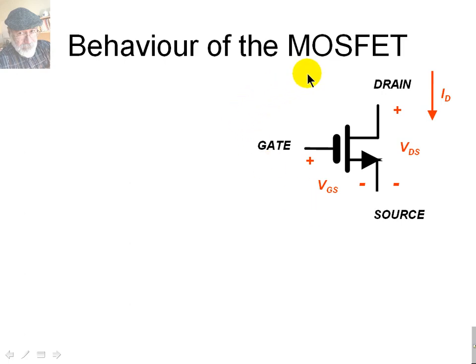How does it behave, the MOSFET? We'll see first the behavior, and later the details of why it works that way. Well, this current, the gate current is zero. It can work as a switch, or it can work as an amplifier.